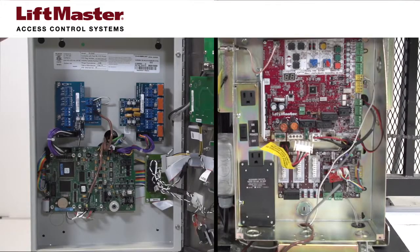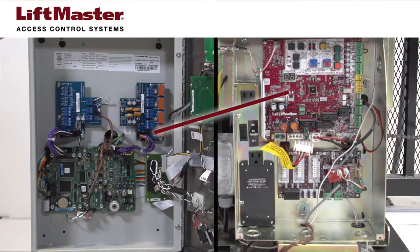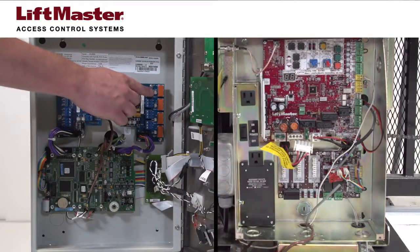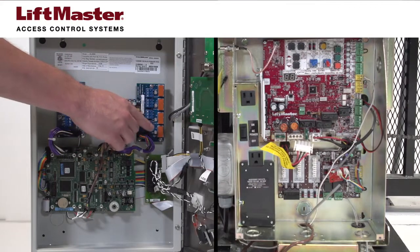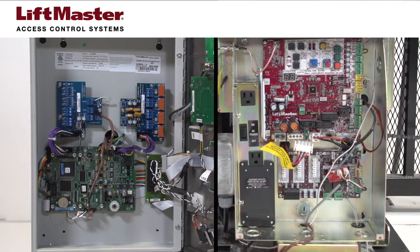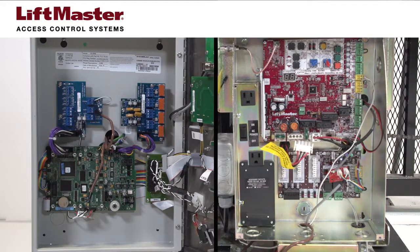You will be wiring a relay contact output from the telephone entry system to a dry contact input on the gate operator. Any of the available control relays in the EL telephone entry systems can be used. We have chosen to use Relay 1. IPAC telephone entry systems can only use Relay 1 or Relay 2 for this function.